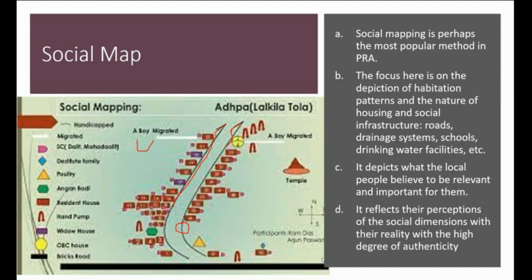Because the villagers know more than us about their village. When they are involved in the data collection stage and data providing stage, it will help us get proper information. Remember one thing: in PRA tools, all data are qualitative in nature, not quantitative. But it is sufficient to substantiate the quantitative data. Village to village, the map will be different, but the points coming out from those meetings will be very helpful for us as development workers. It reflects their perceptions of the social dimensions with a high degree of authenticity. Since they are providing information based on their perception, and most of the villagers verify that information, these types of data are more authentic in nature.